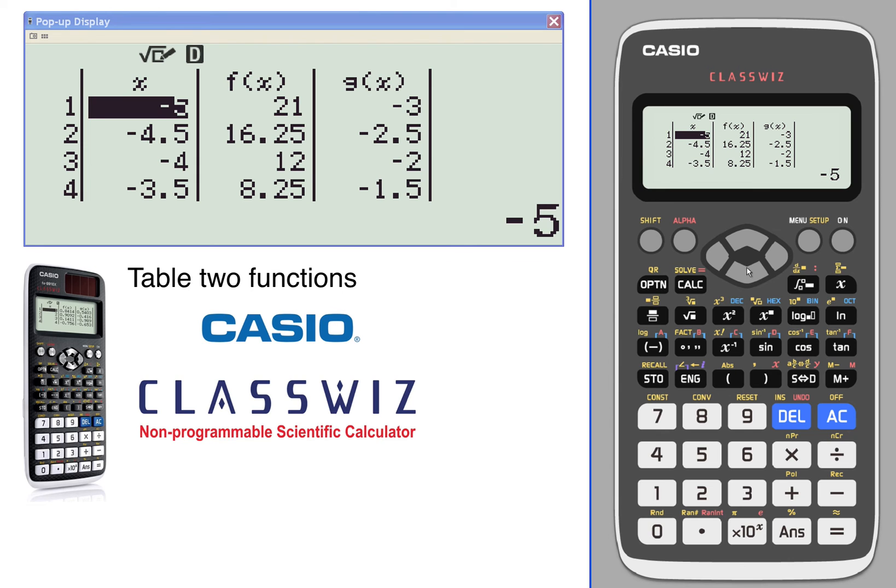That appears to be okay. Here's your table with each one of those two functions evaluated for both f of x and g of x.